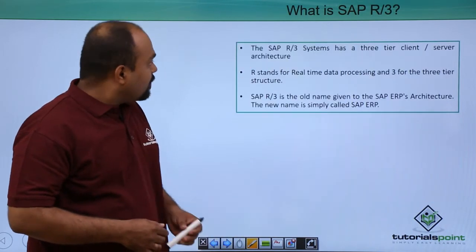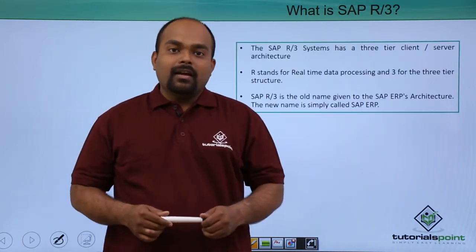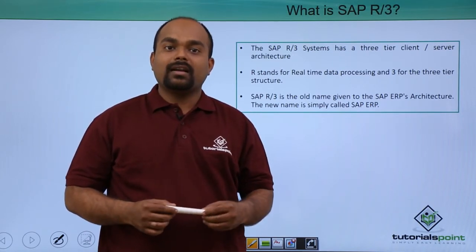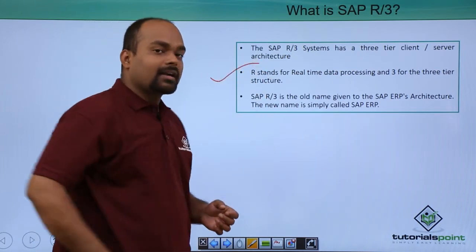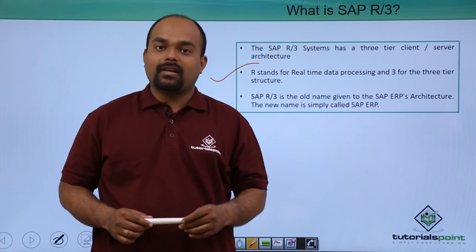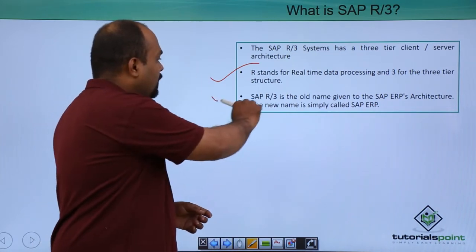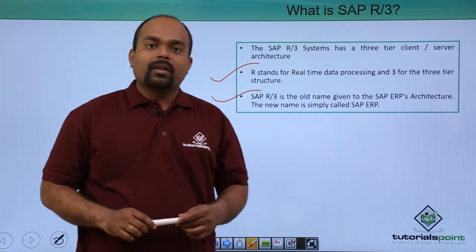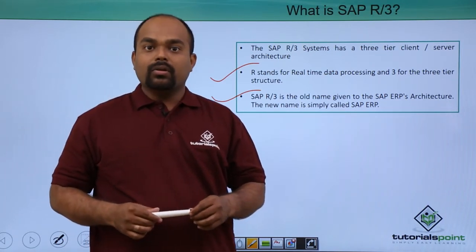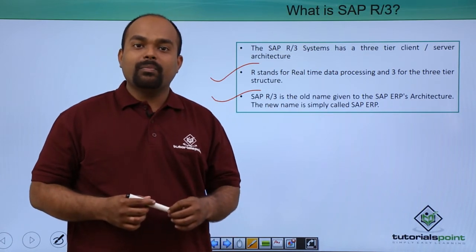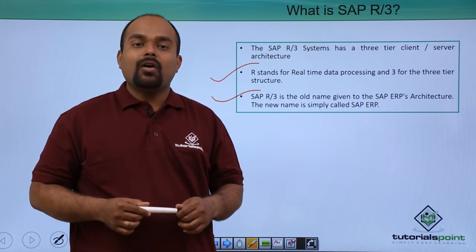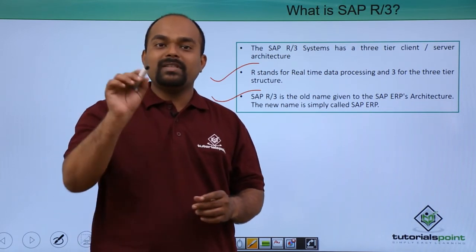SAP R3 is a three-tier architecture system. R stands for real-time data processing and 3 stands for the three-tier architecture. The SAP R3 name has now been removed and it is currently called SAP ECC6, SAP EHP7, or simply SAP ERP.